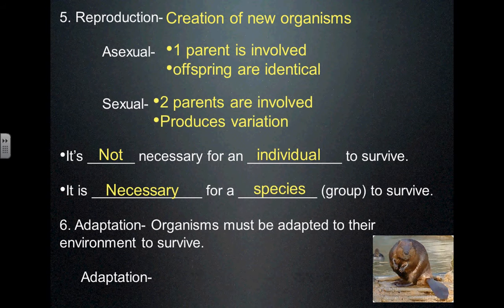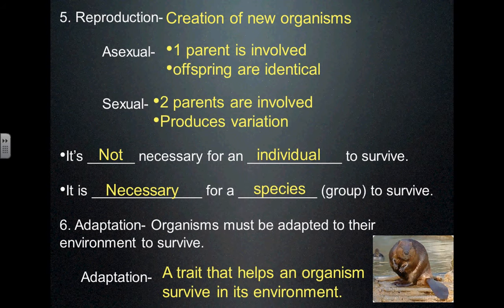Number six, the last one: adaptation. All living things are adapted to their environment — they have characteristics and traits that allow them to be successful. This beaver — what adaptations does a beaver have to its environment that allows it to survive? Its tail used for swimming; its teeth to cut through wood to build a home. Its fur is waterproof so it can swim through the water, and it can hold its breath for a long time. The tail is also used to help pack mud. So these are all adaptations — traits and characteristics that help that organism survive in its environment.